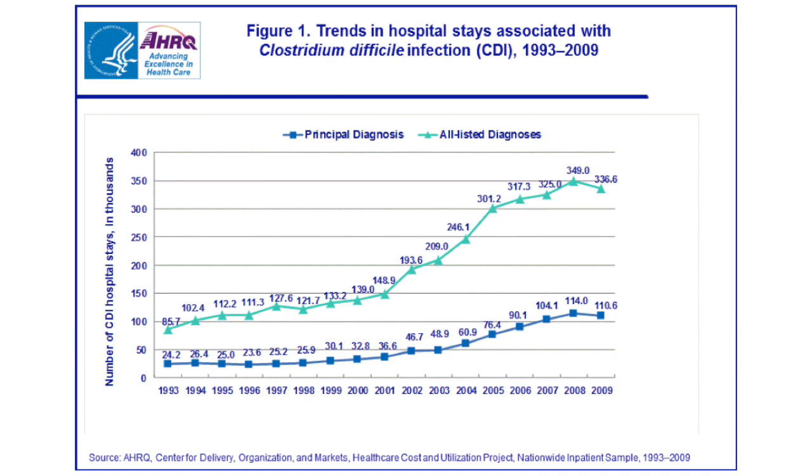C. diff, like all bacteria, has several strains, and if there's one to worry about, it's ribotype O27 — a hypervirulent strain that emerged in 1985 but has been out-competing other C. diff strains over the past 20 years.